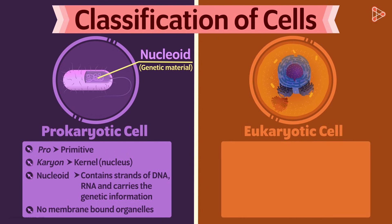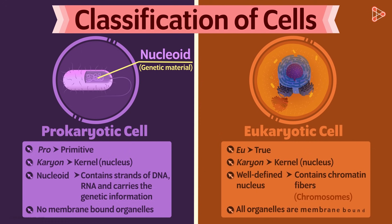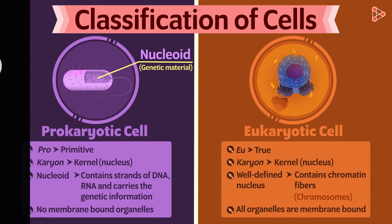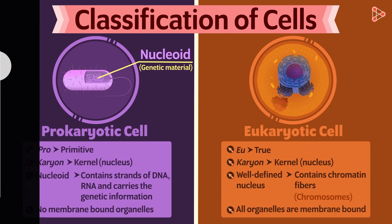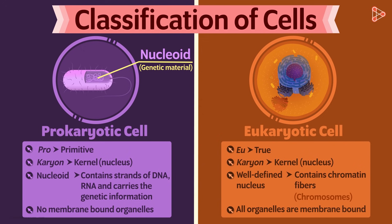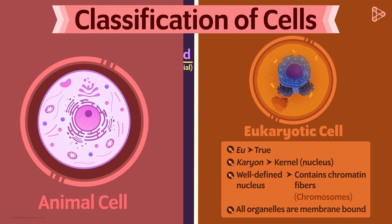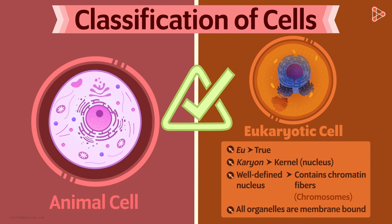The next obvious difference is that the organelles are also not membrane-bound — prokaryotic cells do not have well-defined membranes for their different organelles. On the other hand, the eukaryotic cell, which means a cell with a true nucleus, has well-defined membranes for the nucleus as well as the other organelles. There are several other features, but we will not get into the details for now. Doesn't this look like an animal cell? Yes — that's because this is an animal cell.